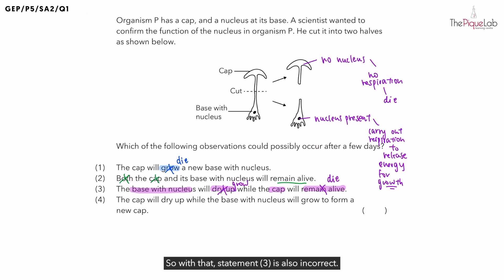So, with that, statement three is also incorrect. Now, let us look at the last statement, statement four. It says that the cap will dry up while the base will continue to grow. So, is it true that the cap will dry up? The cap is over here. We know that eventually, it dries up and dies. So, this is correct.